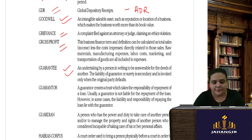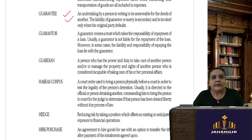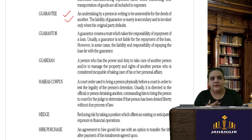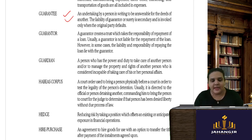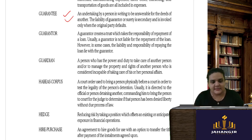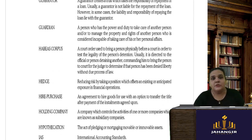Guarantee is an undertaking given by a person who will be answerable on the default of another person who is liable to make payments. A guarantor, or surety, takes responsibility for repayment of the loan — generally not liable, but if the main debtor fails, the guarantor makes the payment. A guardian is a person who takes care of another person.